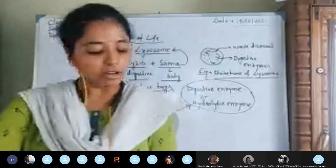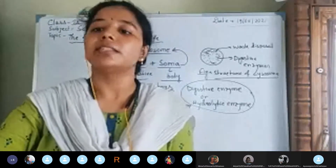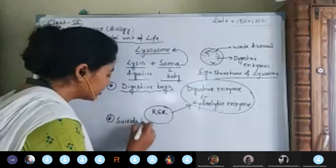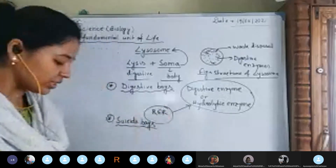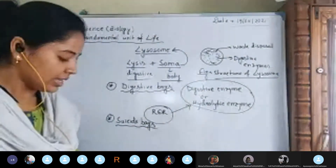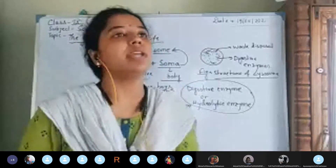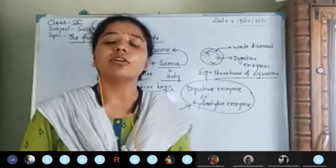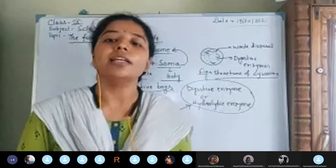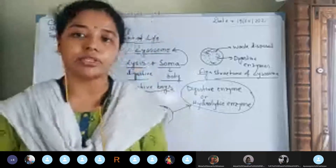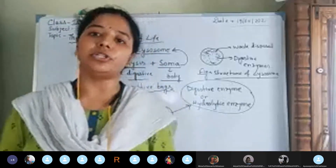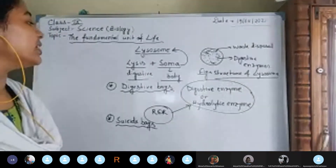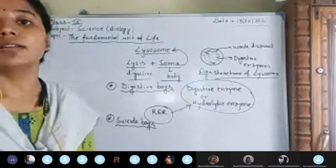Because of their ability to kill and digest the cellular components of the cell, lysosomes are known as suicide bags. Now there is also an exception: just as with endoplasmic reticulum and Golgi body, lysosomes are also not found in plant cells and mammalian RBCs. You must note down this exception.